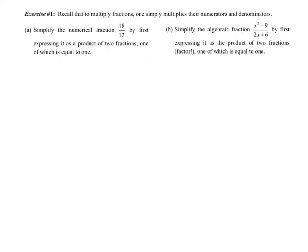Exercise 1. Recall that to multiply fractions, one simply multiplies their numerators and denominators. So part A, simplify the numerical fraction 18 over 12, by first expressing it as a product of two fractions. So all I'm saying is really 18 over 12 is really equal to some fraction times another fraction. And here's the only hiccup. One of the fractions has to be equal to 1.